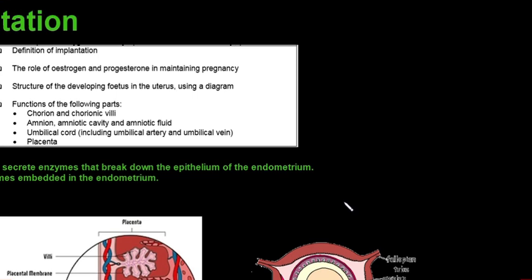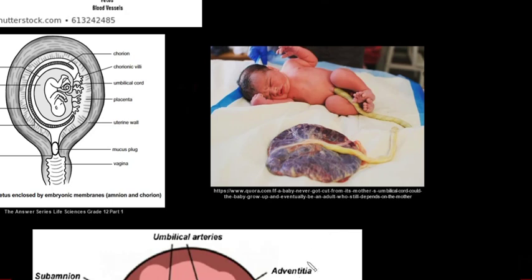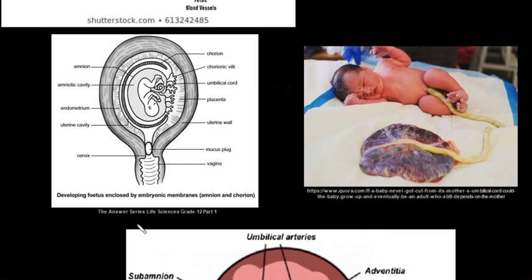Looking at the structure of the developing fetus in the uterus: you need to know the chorion, chorionic villi, umbilical cord, placenta, endometrium, amniotic cavity, amnion, and amniotic fluid. There's a mucus plug in the vagina preventing fluids from escaping through the cervix. The placenta is made up of the endometrium and fetal trophoblast projections. The chorion surrounds the fetus with chorionic villi, and the amnion forms a sac around the fetus filled with amniotic fluid.